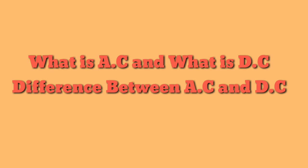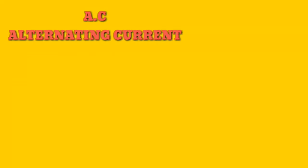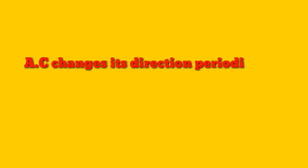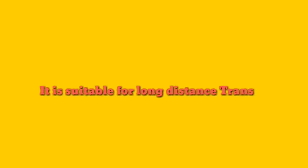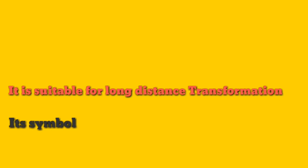What is AC and what is DC? The difference between AC and DC. AC is alternating current. AC changes its direction periodically. AC is used for long-distance transmission.